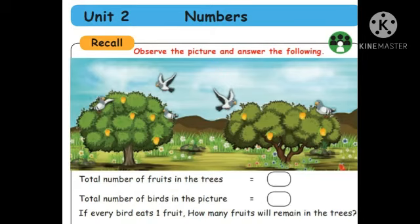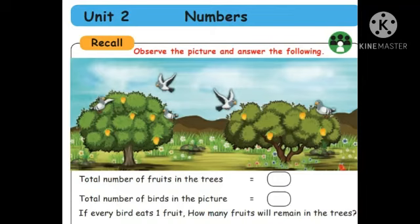There are two trees in the pictures. Here we can see some questions. Total number of fruits in the tree — how many fruits are there in the two trees? Shall we count? One, two, three, four, five — in the first tree. How many fruits? Five. And in the second tree — one, two, three, four mango fruits. Total altogether, nine fruits are there. You have to write number nine in the given box.